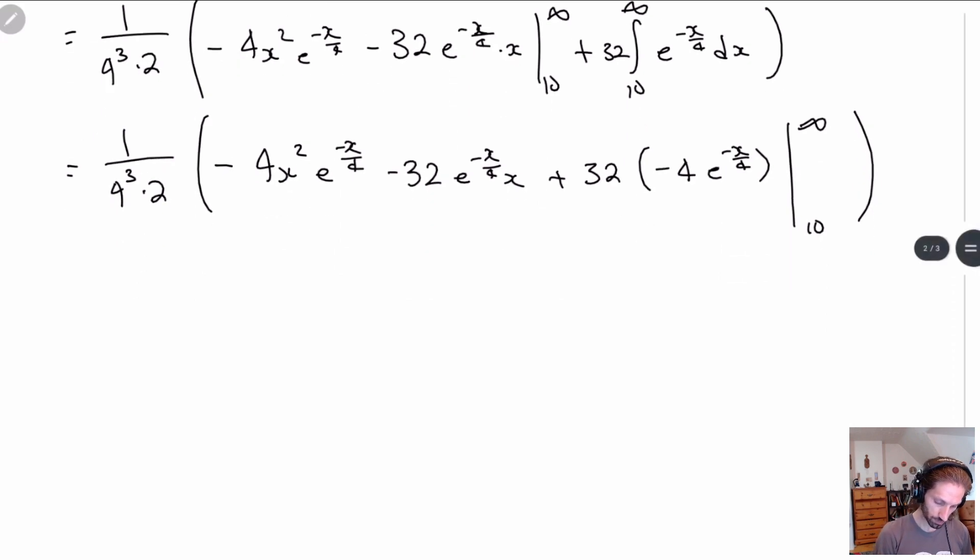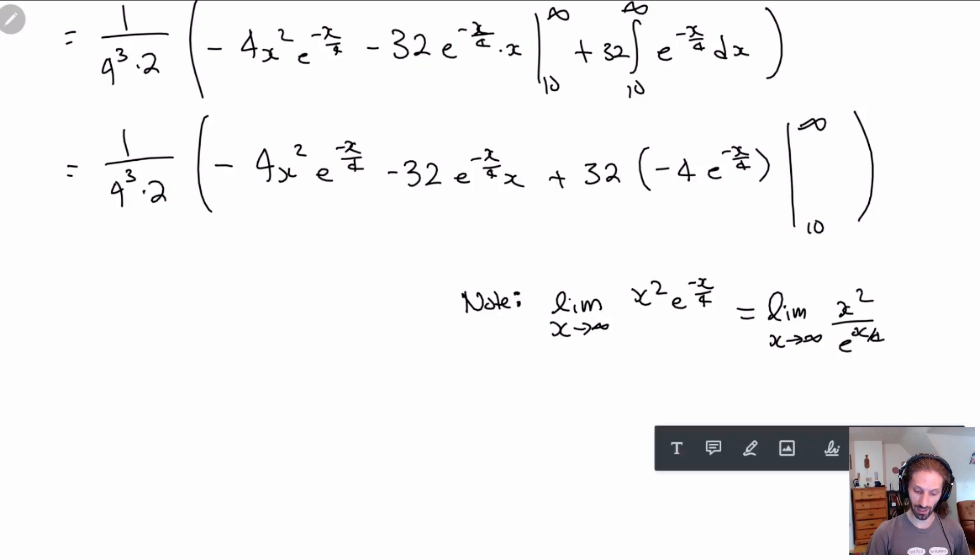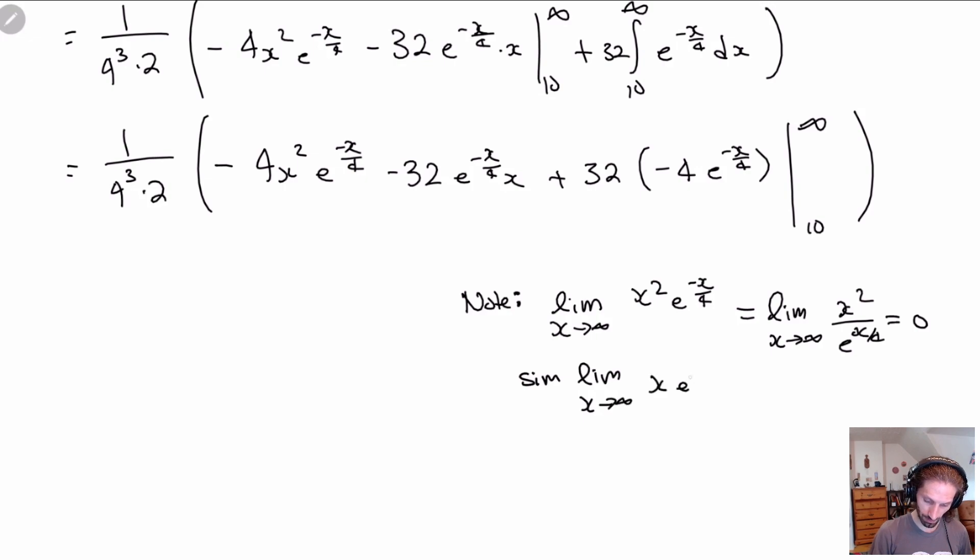Now the thing to note is, note, limit as x goes to infinity of x squared e to the minus x over 4. This is just going to be 0, and you should probably remember why. The reason why is we have, so this is just the limit as x goes to infinity, x squared over e to the x to the 4. And since exponential grows significantly faster than x squared, the bottom part is going to go much, much bigger, so it's just going to end up being 0. So this is 0. And similarly, we have the limit as x goes to infinity of x e to the minus x over 4 is 0. And the limit as x goes to infinity of e to the minus x over 4 is equal to 0. Because we can't technically plug in 0. Remember when we try to plug in 0, we're supposed to be taking limits.